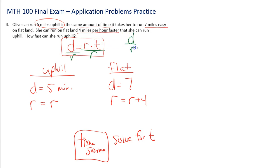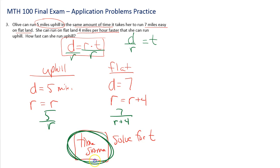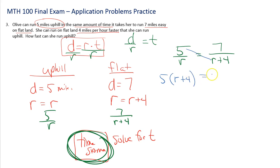Since time is the same, I need to solve for T. Taking distance equals rate times time and dividing both sides by R gives T equals distance over rate. For uphill, that's five over R. For flat land, that's seven over R plus four. Since the times are equal, I set them equal: five over R equals seven over R plus four. This is a proportion, so cross multiply.